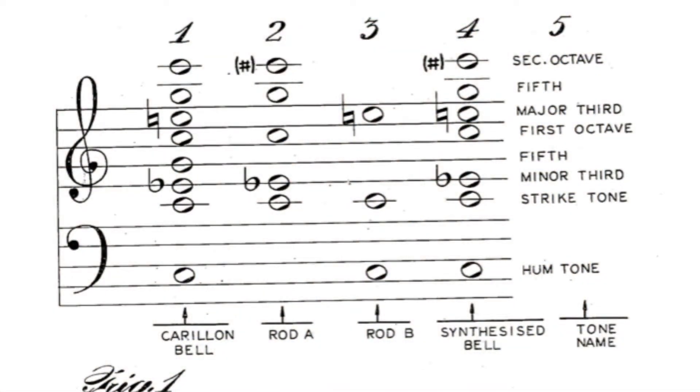Here's the illustration from the patent. The first column, marked carillon bell, displays the same overtone series we looked at a moment ago. The next two columns are labeled rod A and rod B, and the patent explains that for this instrument, each note will be produced by two rods, being tuned to different pitches, and struck at the same time.